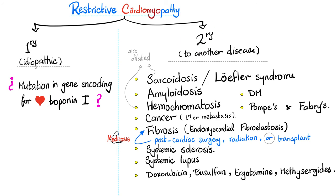Secondary means another disease started first and then caused restrictive cardiomyopathy. The mnemonic: sarcoid, amyloid, hemochromatosis, cancer, and fibrosis. Whenever you say sarcoidosis, also say Loeffler syndrome — if you want to know the difference, check out my rheumatology playlist. Amyloidosis has many types, covered in my pathology playlist.